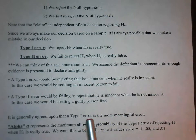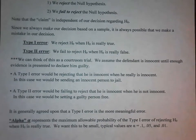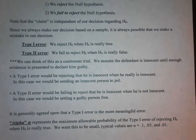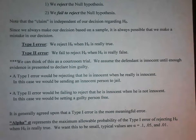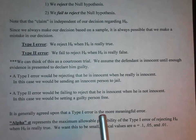It's generally agreed upon that a type 1 error is the more meaningful error. You've all seen documentaries on Netflix about DNA exonerating innocent people and cases like that. It is a really tragic situation when an innocent person gets sent to jail, especially for a very serious crime like murder or rape, where they might be doing a lot of time. So it's generally agreed upon that type 1 errors are the worst error to make.